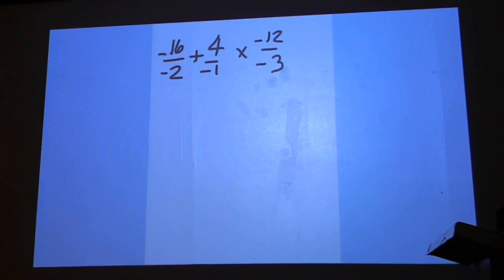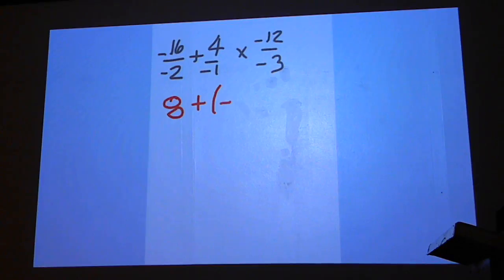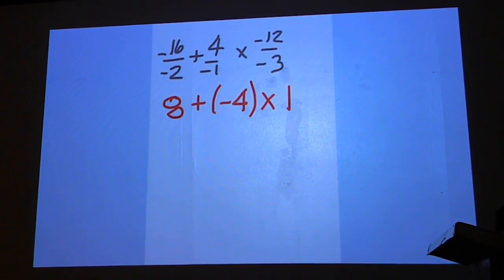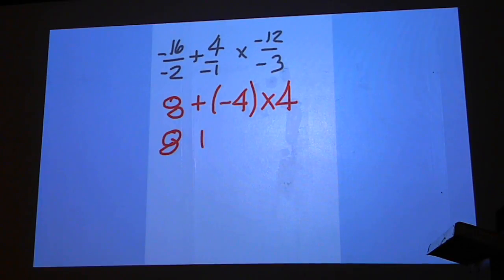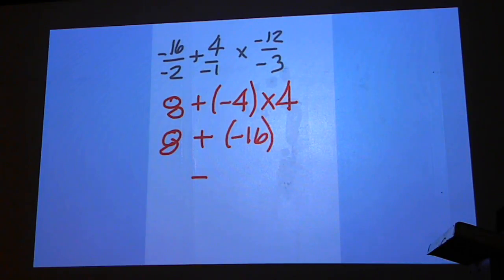And negative 16 over negative 2 is 8. And then 4 over negative 1 is negative 4. And negative 12 over negative 3 is positive 4. So positive 8, plus negative 4 times 4 is negative 16. So that should be negative 8.